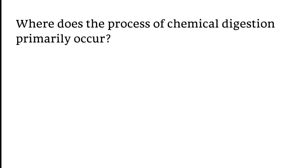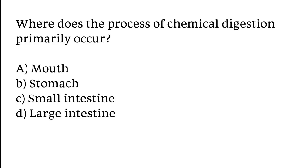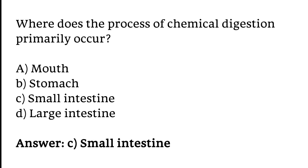Where does the process of chemical digestion primarily occur? Options: A) mouth, B) stomach, C) small intestine, D) large intestine. The correct answer is option C. The process of chemical digestion primarily occurs in the small intestine.